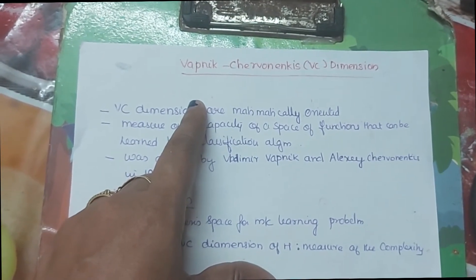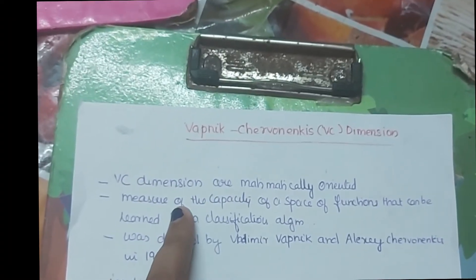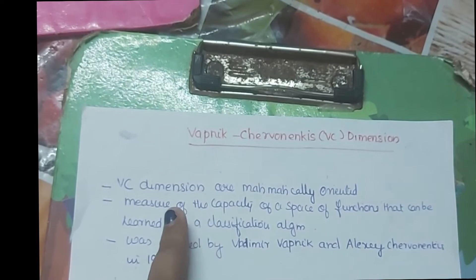Vapnik, Chervonenkis, VC Dimension. VC Dimension is mathematically oriented. That means the measure of the capacity of the space is done in this case.